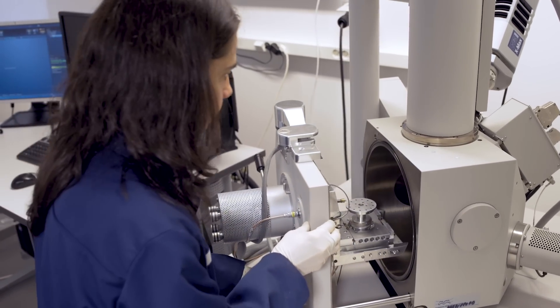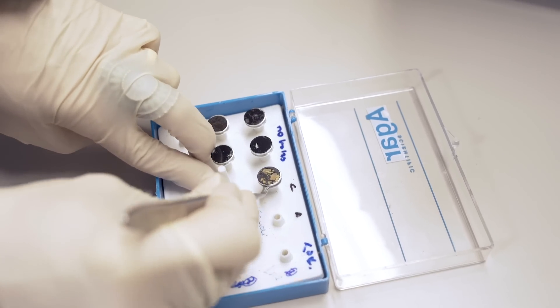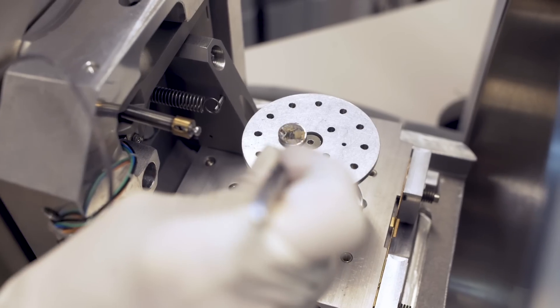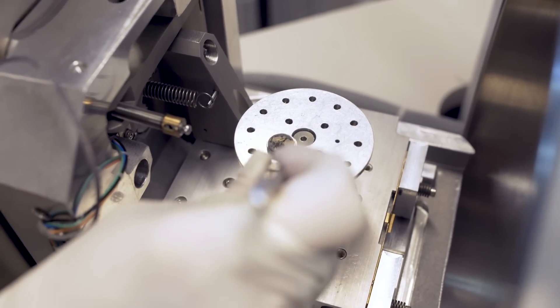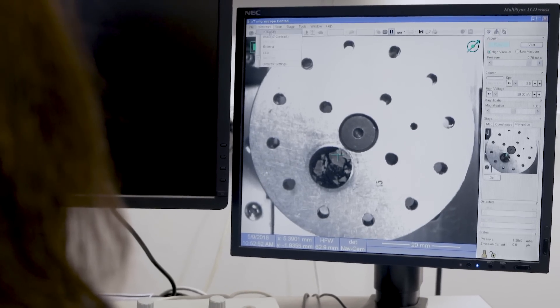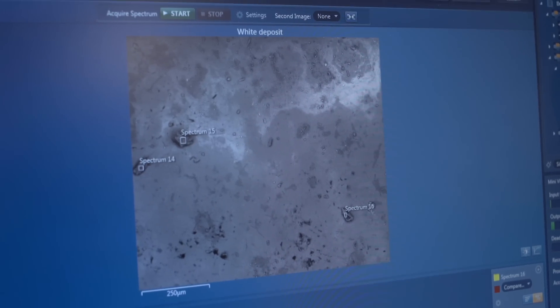When we get the fouling sample or a fouled plate from the customer, we need to know what the fouling consists of. We use our scanning electron microscope to see what is the elemental composition of the fouling. By knowing the elemental composition, the color of the fouling, and the application that the heat exchanger has been used in, we can determine the fouling type.